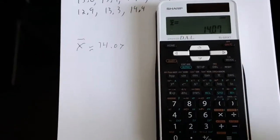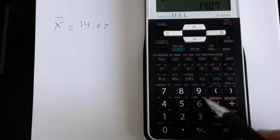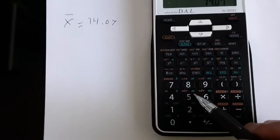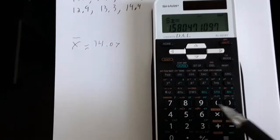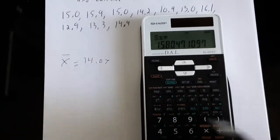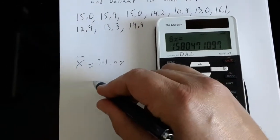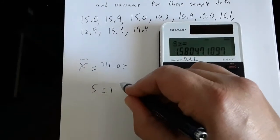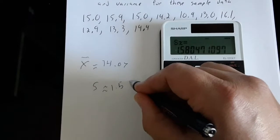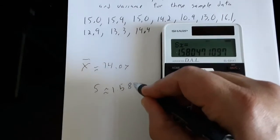Now if I want to find the standard deviation, that's right here above the number 5, SX. That's our sample standard deviation, so recall SX. And it tells me my sample standard deviation is about 1.5805.